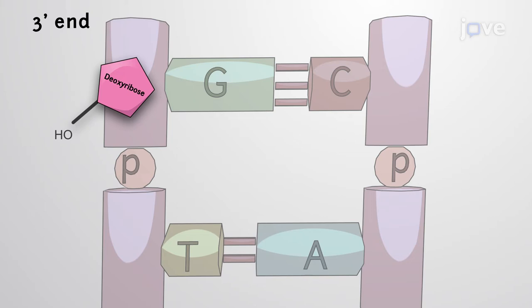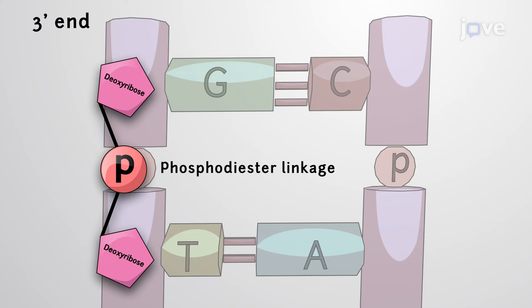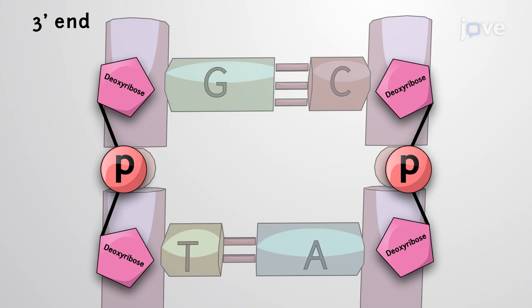On one strand, at the 3' end, the sugar is oriented with the hydroxyl group exposed at the third carbon atom, which is ready to covalently link to another sugar molecule in the chain at the fifth carbon atom via phosphodiester bonds.